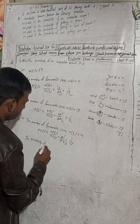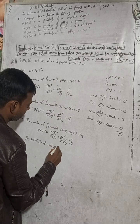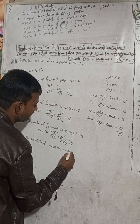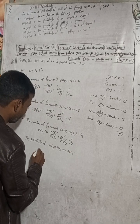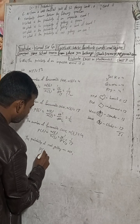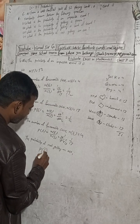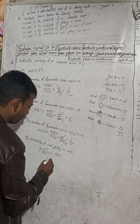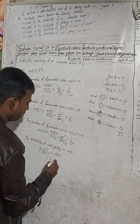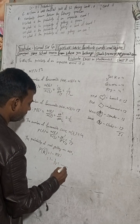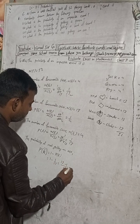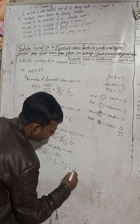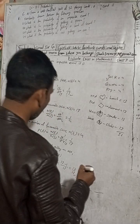Now the probability of not getting an ace. P(E complement) = 1 − P(E). Here P(E) = 1/13, so P(E complement) = 1 − 1/13. The LCM is 13, so 13/13 − 1/13 = 12/13. The answer is 12/13.